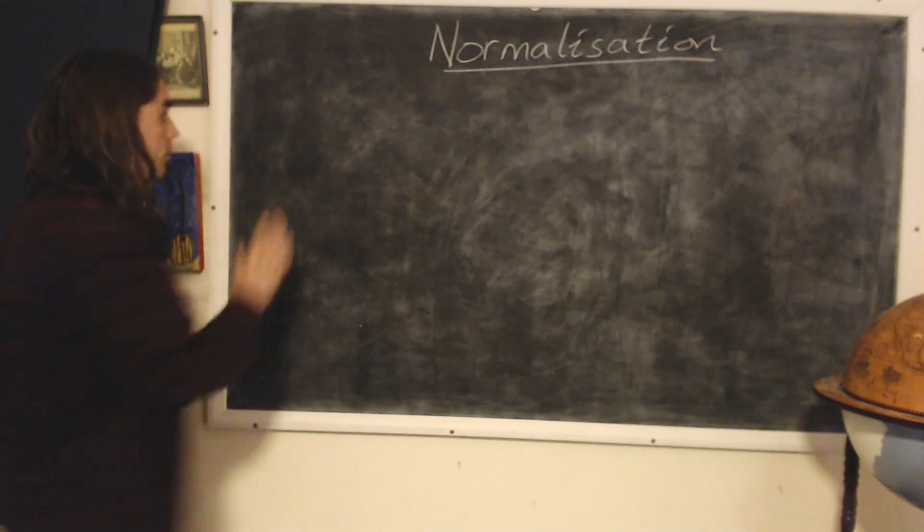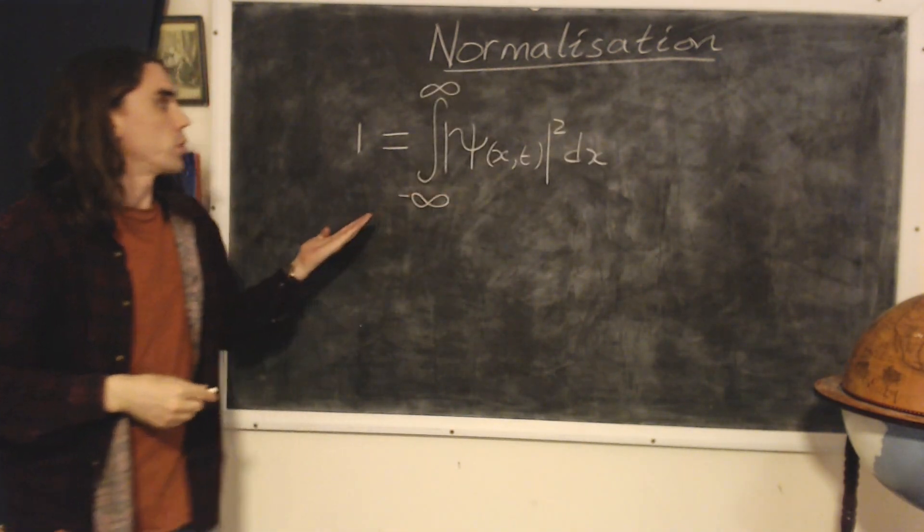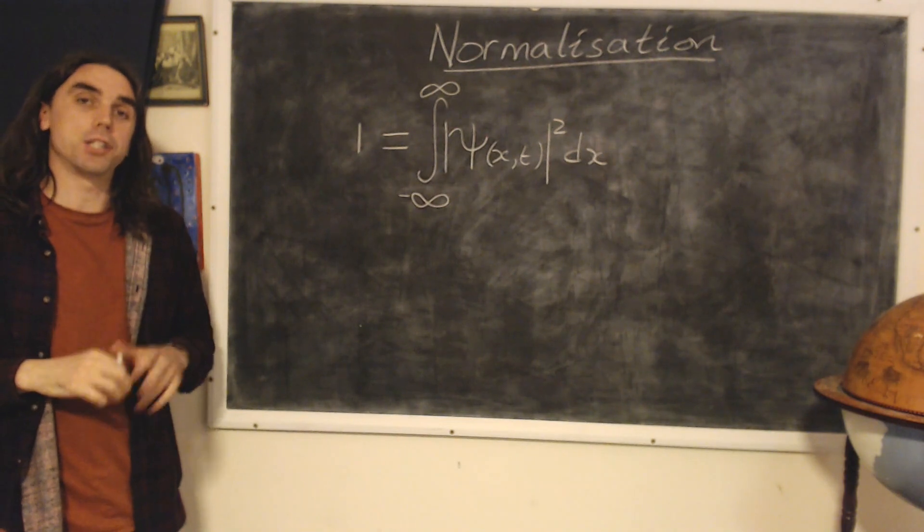Mathematically, we can write this down in the following way, which we saw previously leads to the conservation of global probability.